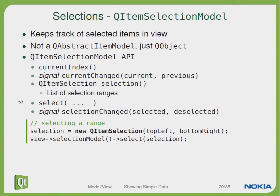You can call the select functions whenever you would like to select some new items. The selection change signal will give you information about newly selected or newly deselected items. The selection is always a range from the top-left to the bottom-right, so you can select multiple items at once.